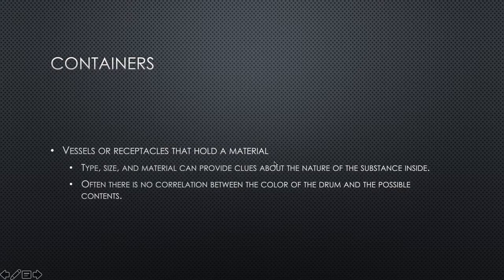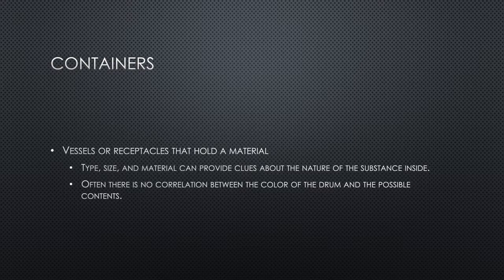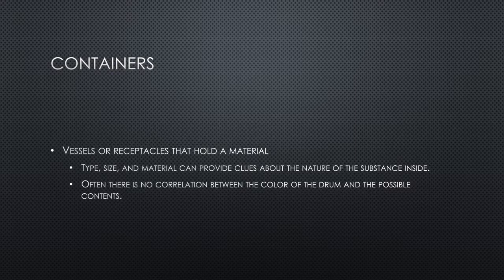Containers — vessels or receptacles that hold the material — can provide clues about the nature of the substance inside based on their type, size, and material. The type of vehicle will actually tell you what's inside. Often there's no correlation between the color of the drum and its contents. Examples of how hazardous materials are packaged, stored, and shipped include steel or polyurethane drums, bags, high-pressure gas cylinders, railroad tank cars, plastic buckets, above-ground and underground storage tanks, cargo tanks, and pipelines. These are divided into two categories: bulk storage vessels and non-bulk storage vessels.